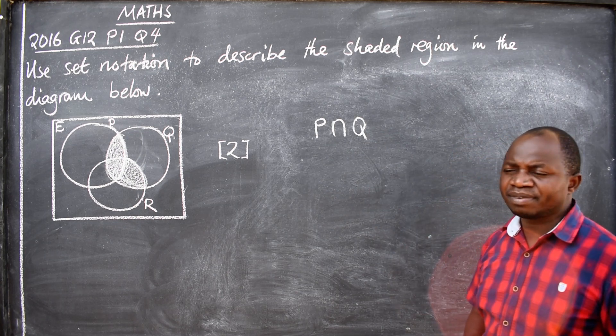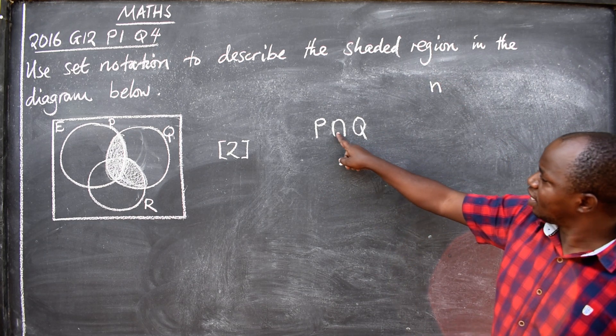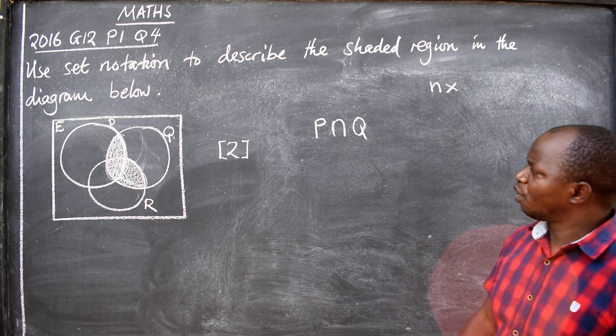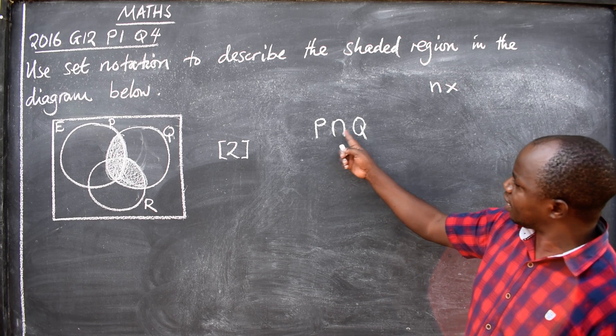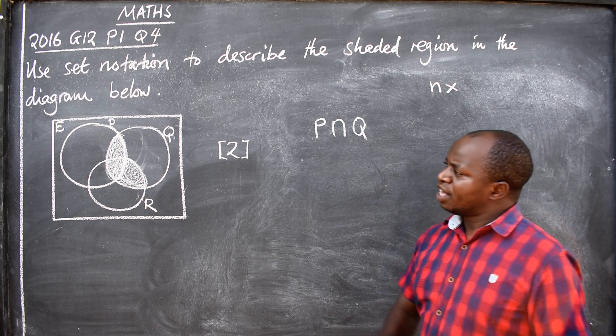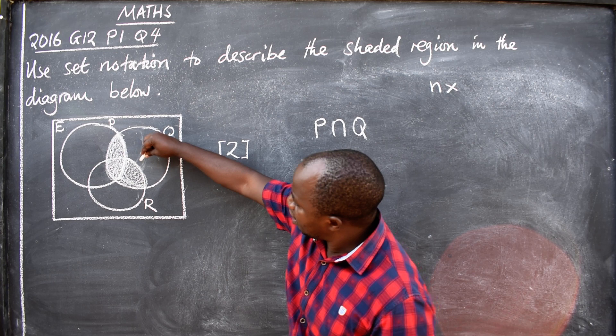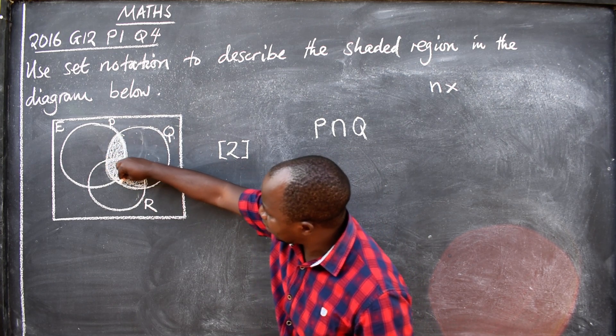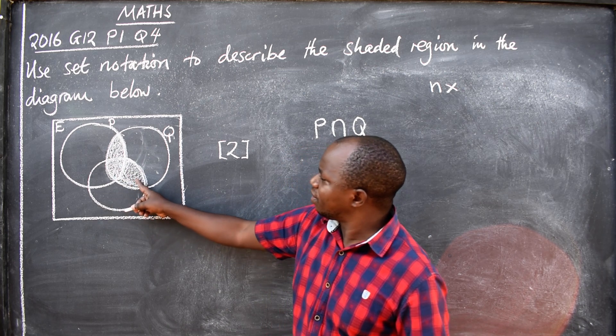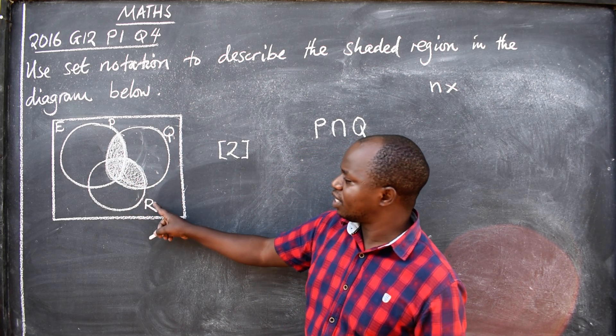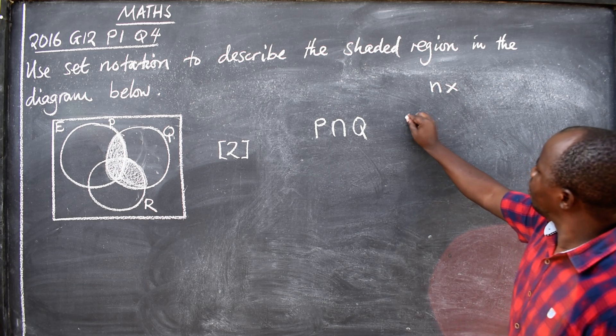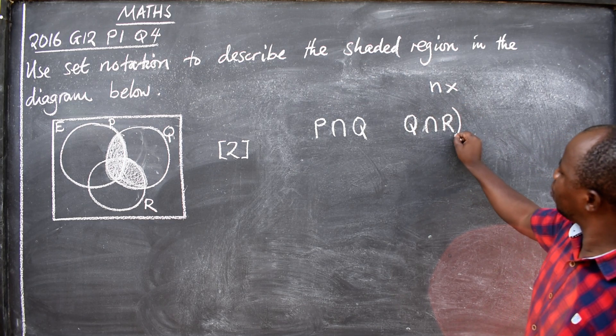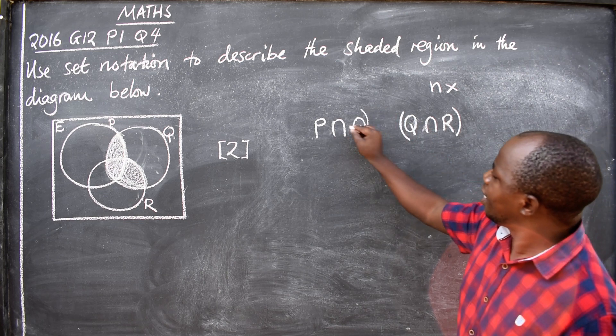Look at the way I've written this: P intersecting Q, that is the meaning of this region here. Then we also have another region here. This one means Q intersecting R, so we have Q intersecting R. We have these two here, now there must be a symbol in between.